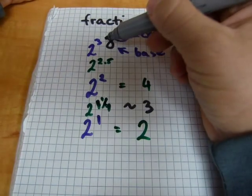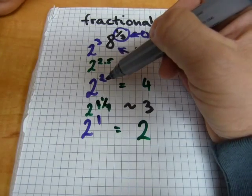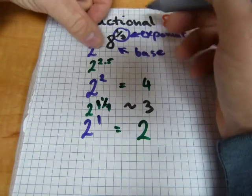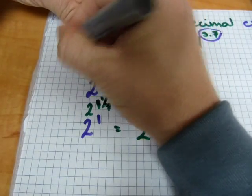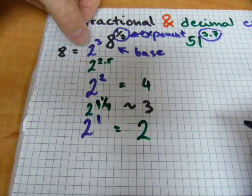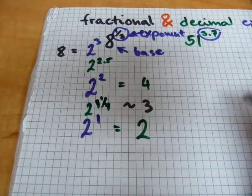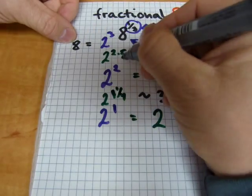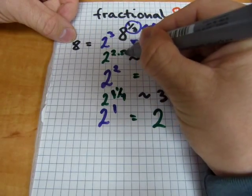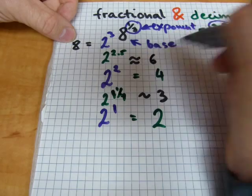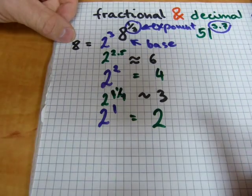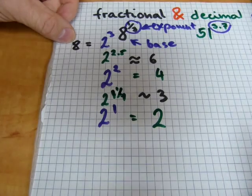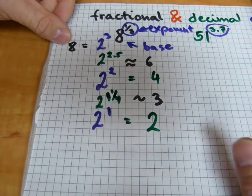And 2 to the power of 2 and 2 to the power of 3. 2 to the power of 3 is 8. I'm going to write that one there because that means 2 by 2 by 2. And a number between 4 and 8, 2 to the power of 2.5 could be reasonably estimated to be 6. It's not 6. It doesn't work that way exactly, but it's reasonably close to 6.